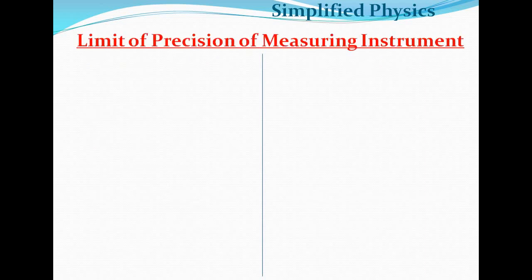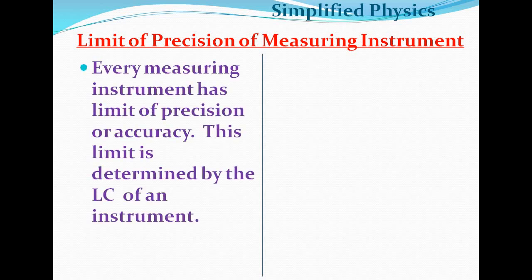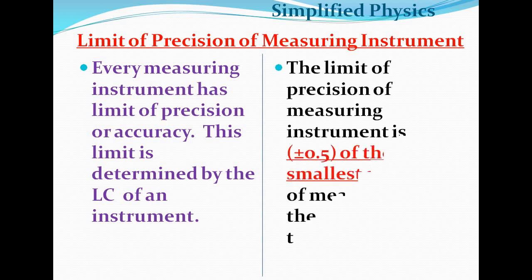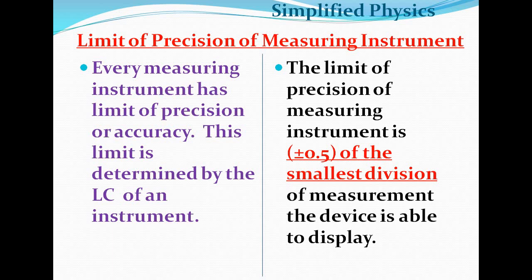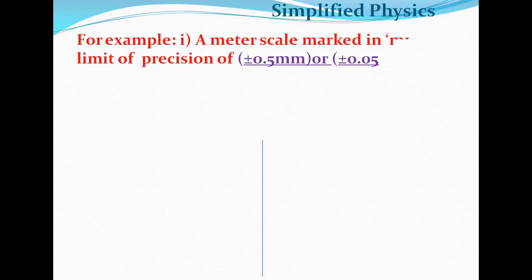Every measuring instrument has a limit of precision, which is determined by the least count of the instrument. The limit of precision is plus or minus 0.5 of the smallest division the device can display — that is, half of the least count. For example, a meter scale marked in millimeters has a limit of precision of plus or minus 0.5 mm, or plus or minus 0.05 centimeter.